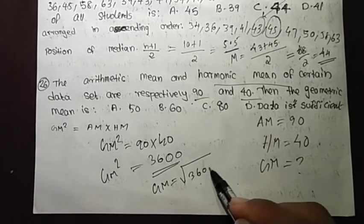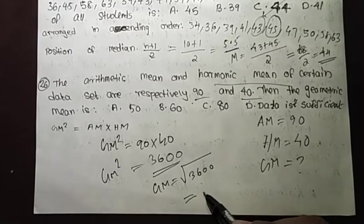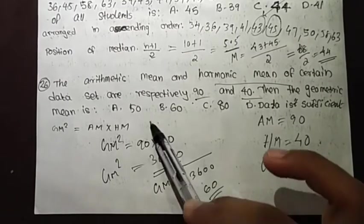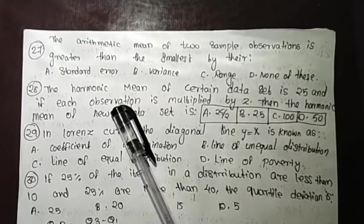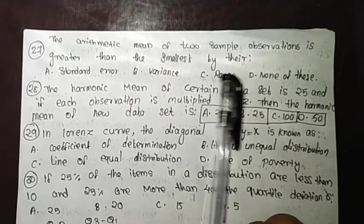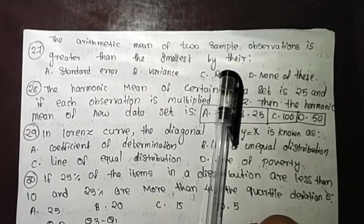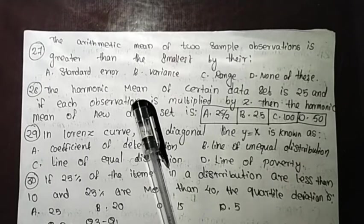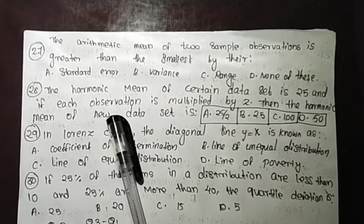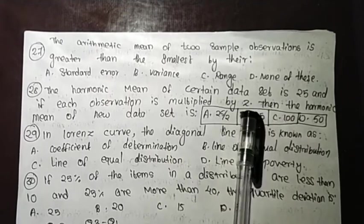Option B is the answer: the arithmetic mean of two sample observations is greater than the smallest by their arithmetic mean. The answer for question 27 is confirmed.